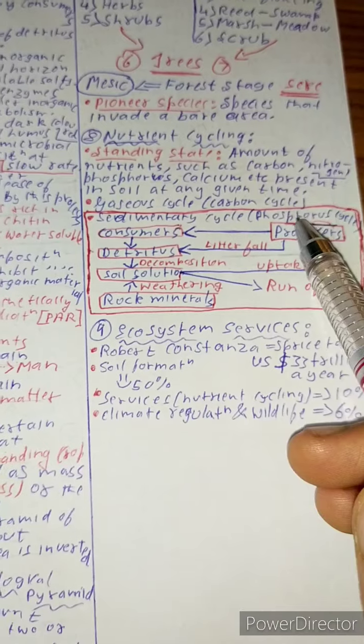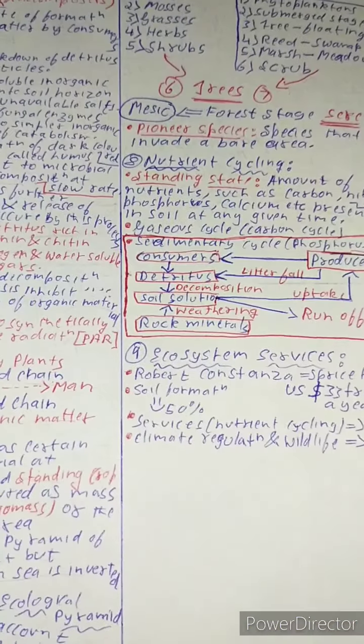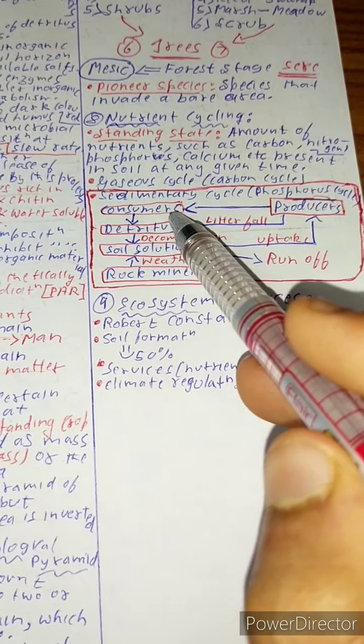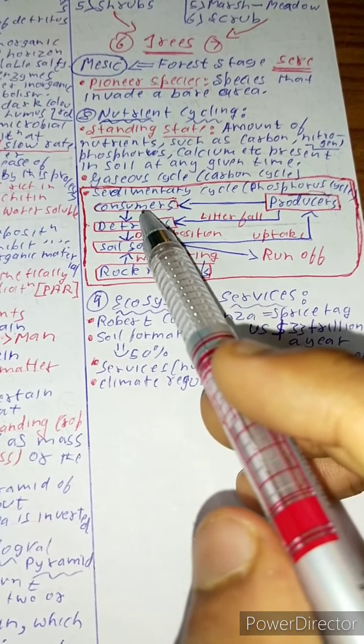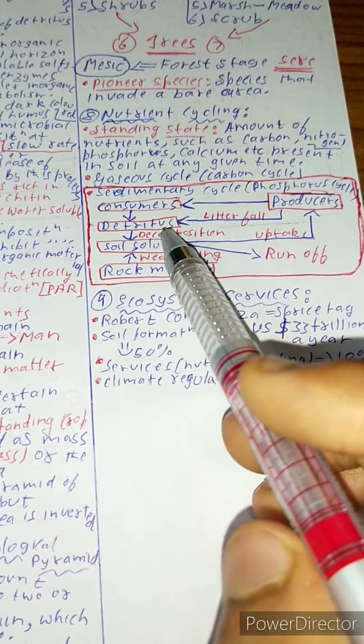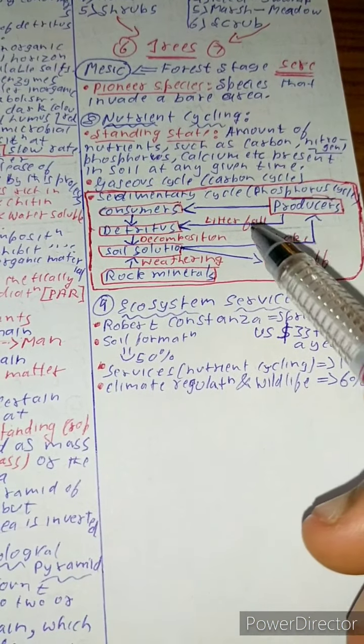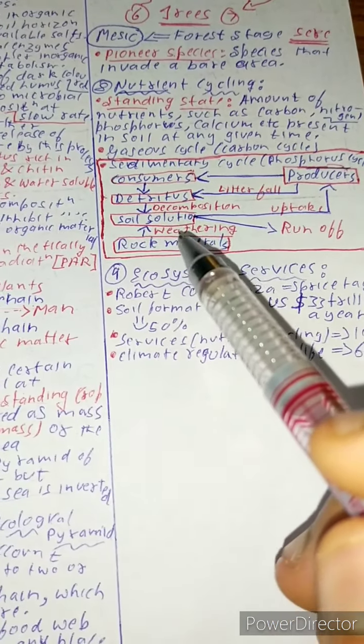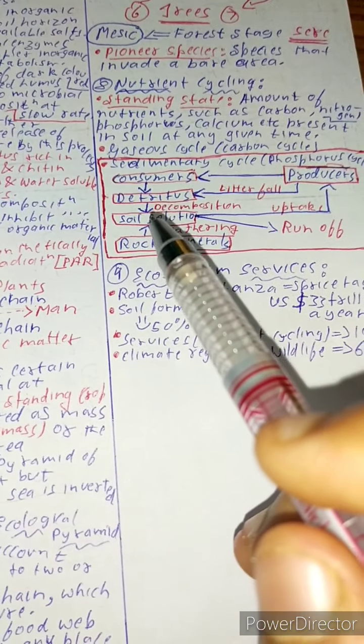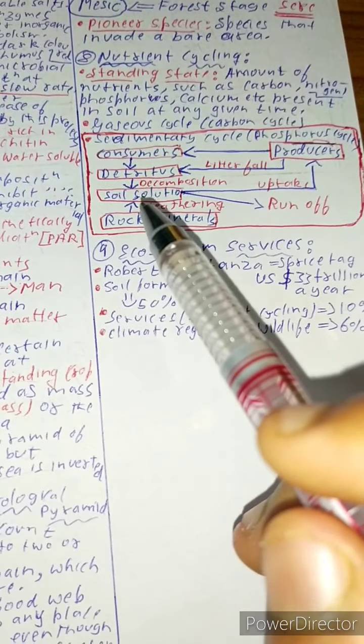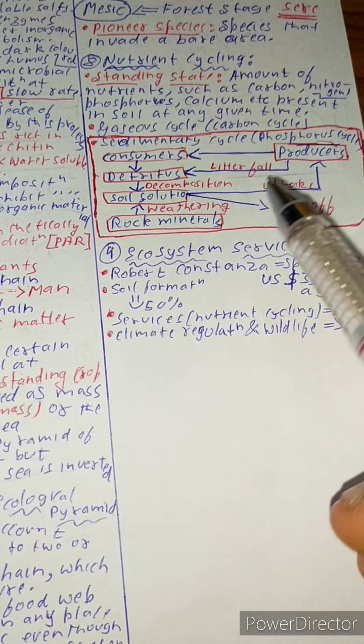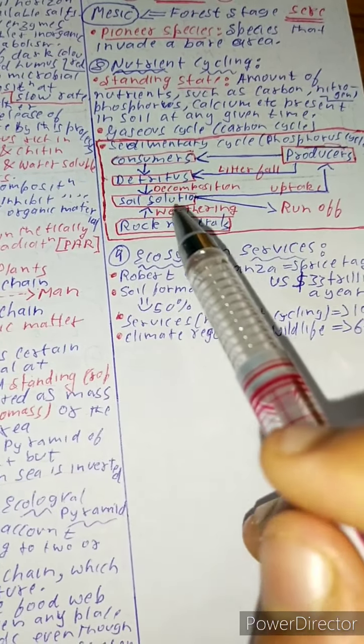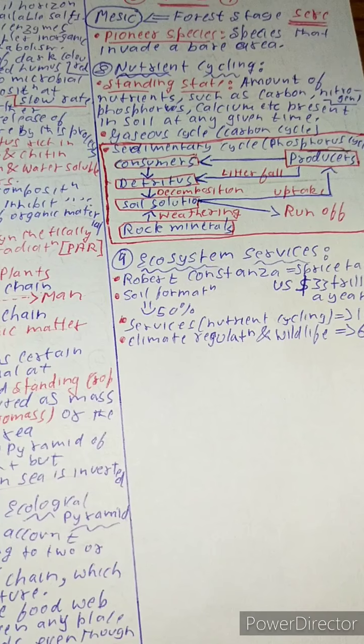But you need to know something about sedimentary cycle, which is also known as phosphorus cycle. Phosphorus is present everywhere, even in sea. First of all, producers are utilized by consumers, which when they die, detritus digest them, and even the litter fall from producers are consumed by detritus. And detritus on decomposition form the soil solution which is taken up by producers, and it also by weathering - the soil solution is formed by rock minerals. And at times the soil solution gets a runoff due to bad weather.